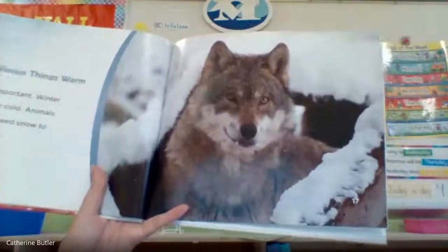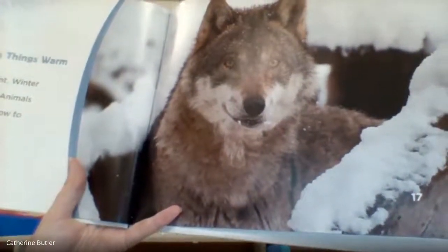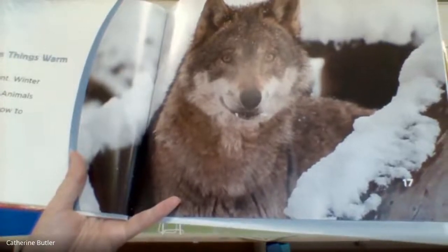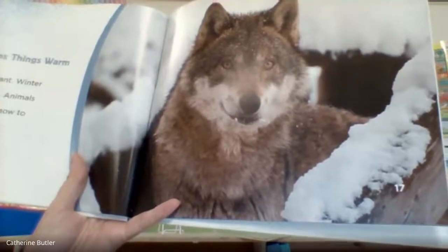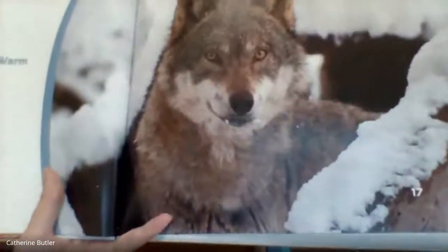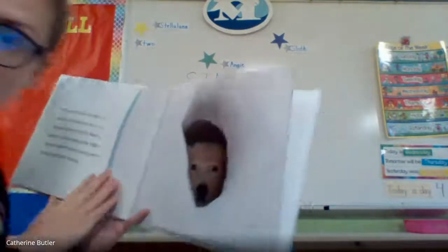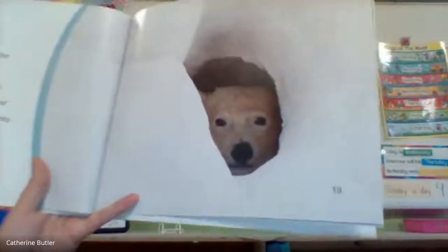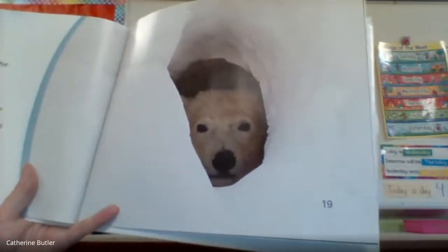Snow keeps things warm. Snow is important. Winter can be very cold. Animals and plants need snow to keep warm. Let's find out how it keeps them warm. Snow traps heat under the ground. Animals sleep in underground homes in the winter, and snow helps keep their homes warm.